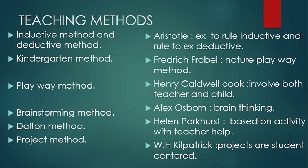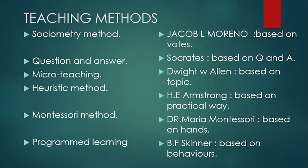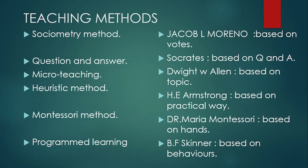The Sociometry Method was given by Jacob L. Moreno. It is based on voting. For example, in a class, students choose a monitor or class leader by voting. The child who receives the most votes becomes the monitor or class leader. This is the Sociometry Method.